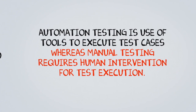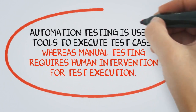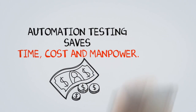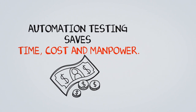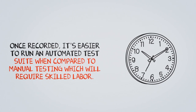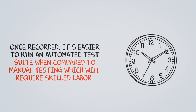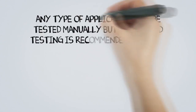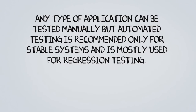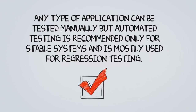Automation testing is the use of tools to execute test cases, whereas manual testing requires human intervention for test execution. Automation testing saves time, cost, and manpower. Once recorded, it's easier to run an automated test suite compared to manual testing, which requires skilled labor. Any type of application can be tested manually, but automated testing is recommended only for stable systems and is mostly used for regression testing.